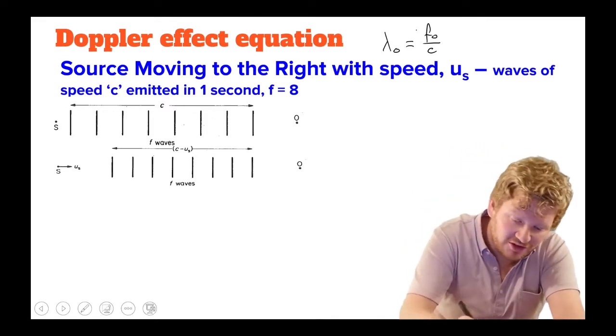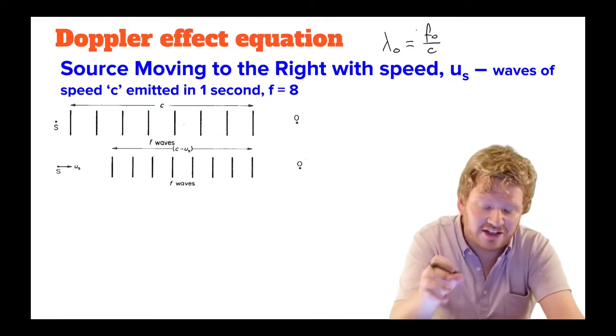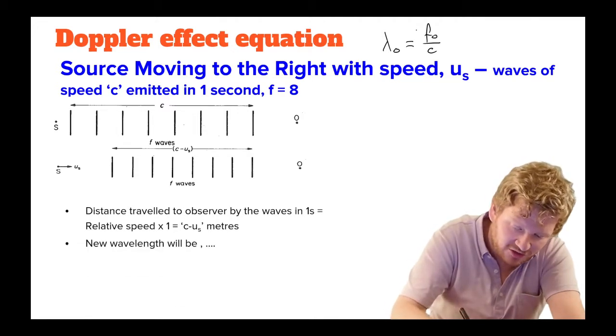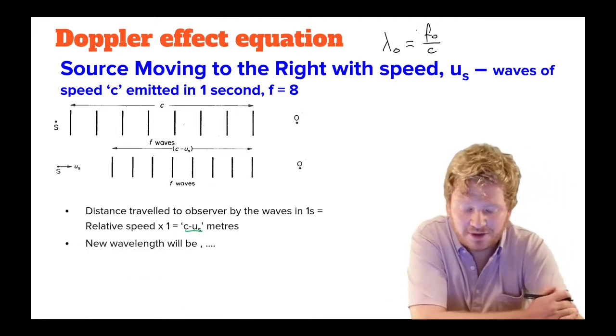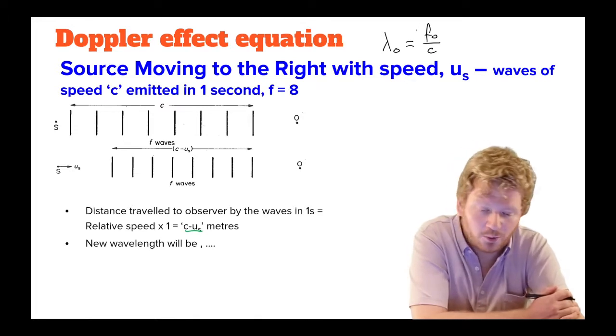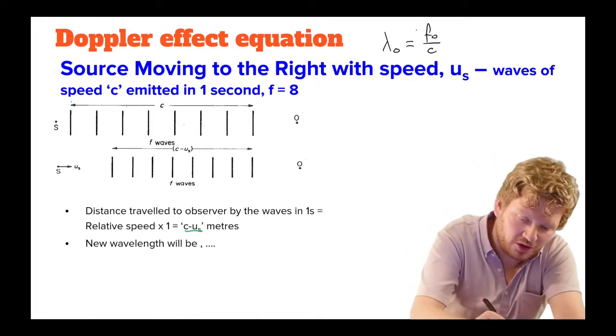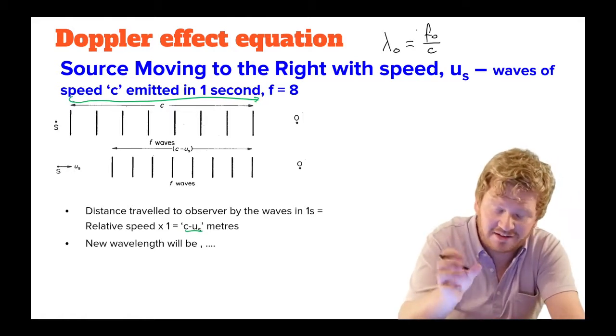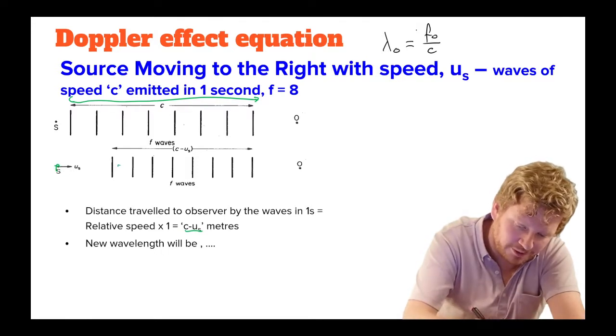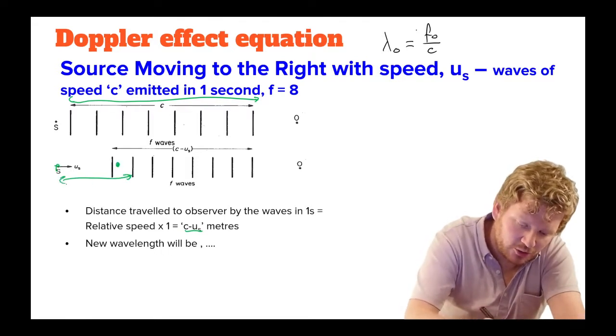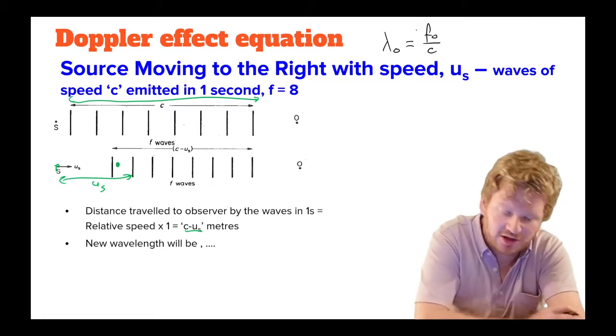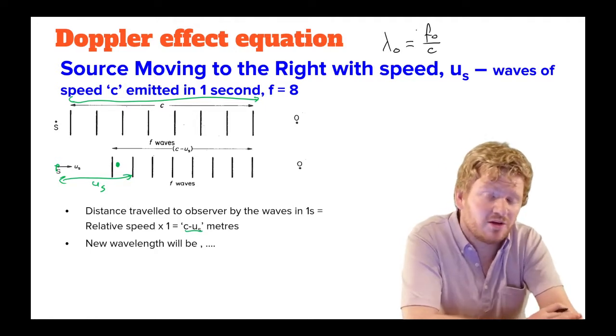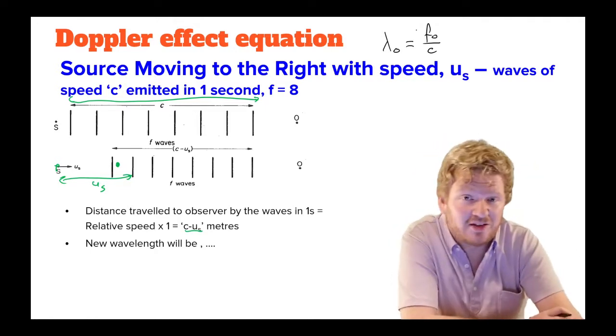However, now the distance between those waves is actually different. The distance between the waves is c minus u metres. Why is that? Well, if the waves were stationary, it would have been c. But in that same time, in that same one second, s has moved from here to here. Now, u will be the speed of the wave, sorry, speed of the source. So in one second it will have moved its speed, because speed is in metres per second.